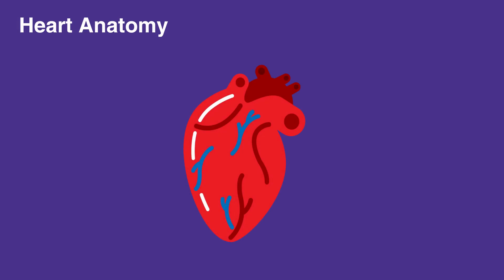The heart is a hollow muscle comprised of four chambers that are all surrounded by thick walls of tissue called septum. The two upper chambers are the atria and the two lower chambers are the ventricles.